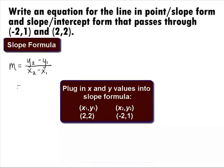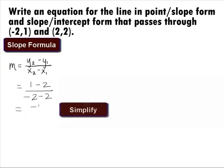Plugging those values into the slope formula, we get 1 minus 2 over negative 2 minus 2. This equals a negative 1 over negative 4. And if we simplify that, we get 1 over 4.